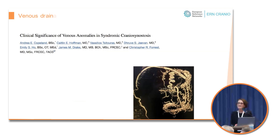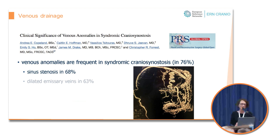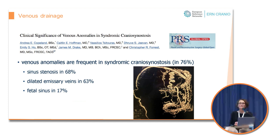Abnormal venous drainage is very common in syndromic craniosynostosis. This is a very interesting paper from Toronto where they analyzed 41 syndromic craniosynostosis cases and found very often venous sinus stenosis in the posterior fossa, and very often these collateral venous networks in the neck region.